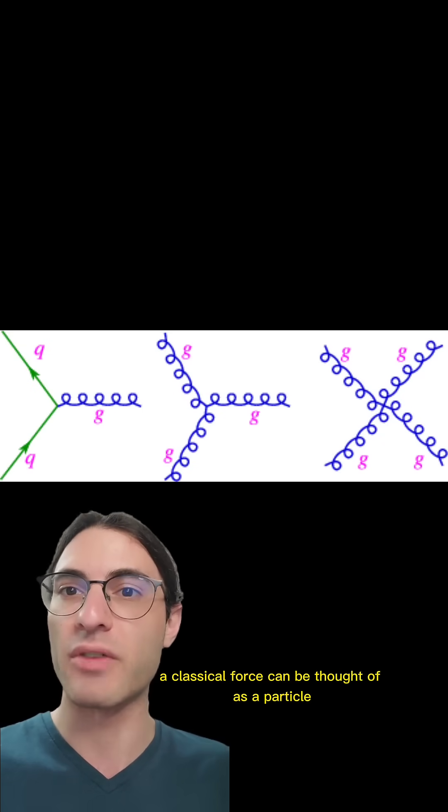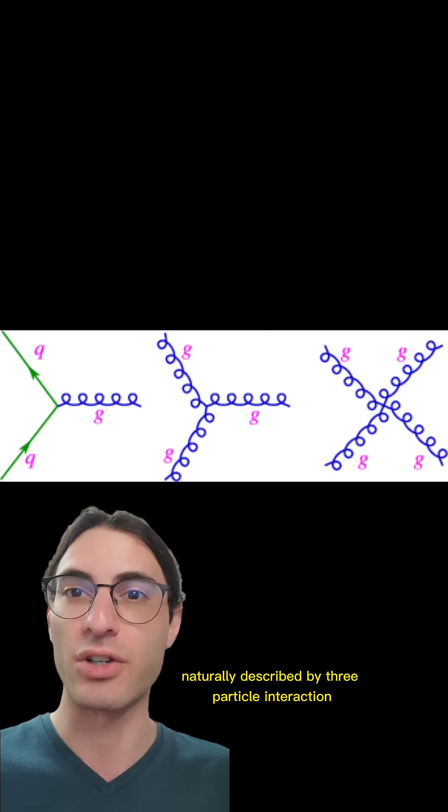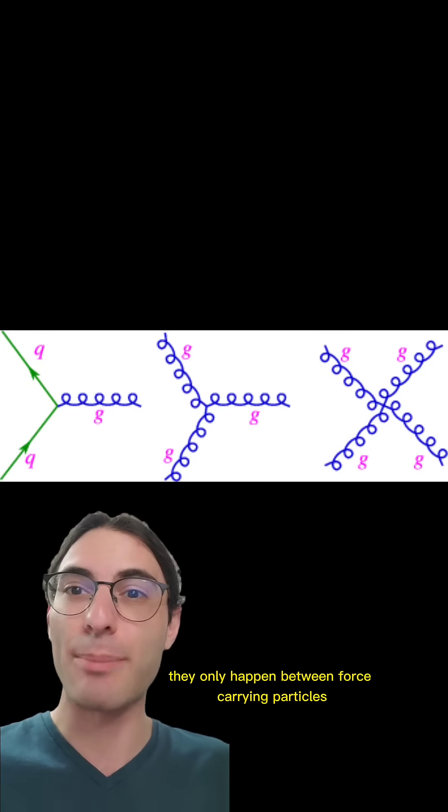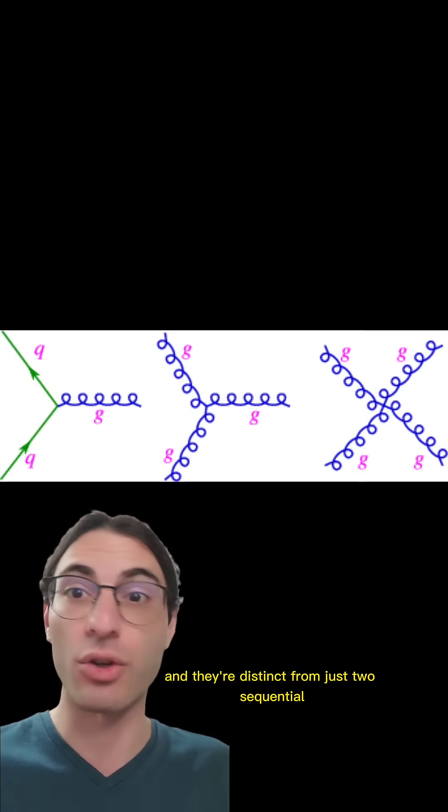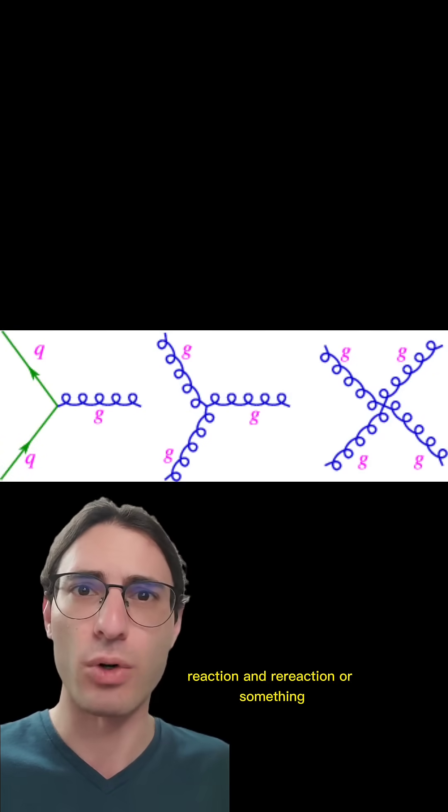A classical force can be thought of as a particle absorbing or giving off a force, which is naturally described by a three-particle interaction. But there is no such intuition for a four-particle interaction because they only happen between force-carrying particles. And they're distinct from just two sequential three-particle interactions. It's like an action, reaction, and re-reaction, or something.